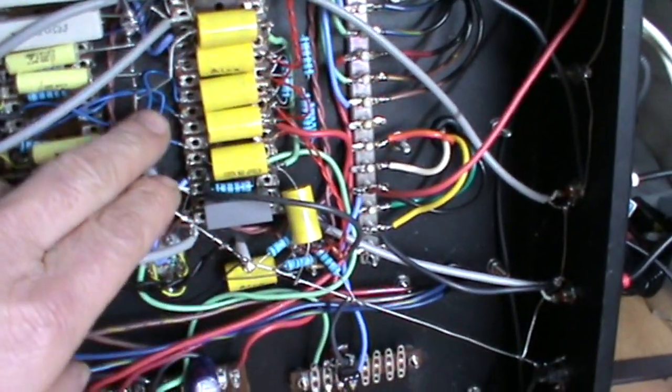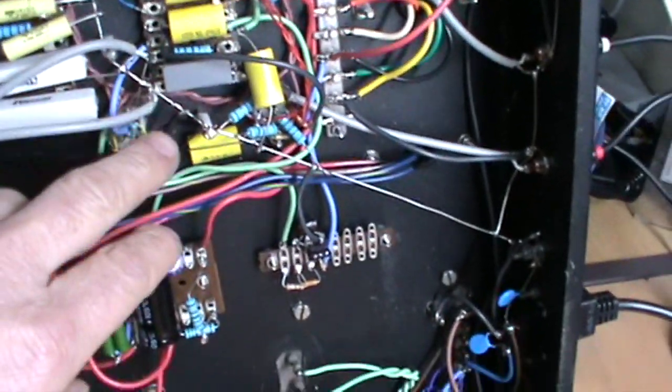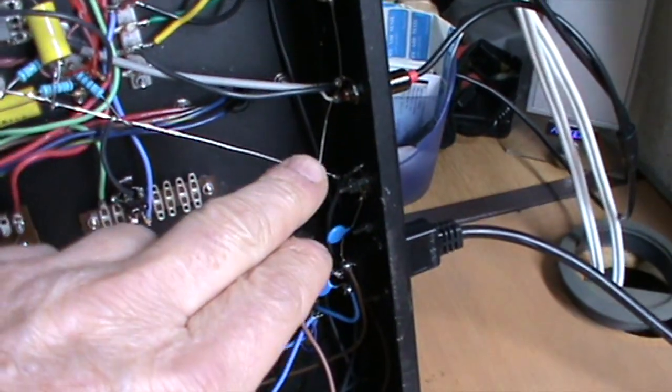The main thing if anybody's contemplating building something like this is the earthing - earthing is quite critical on an audio amplifier. You've got to have a single bus bar which goes to a single point on the chassis.